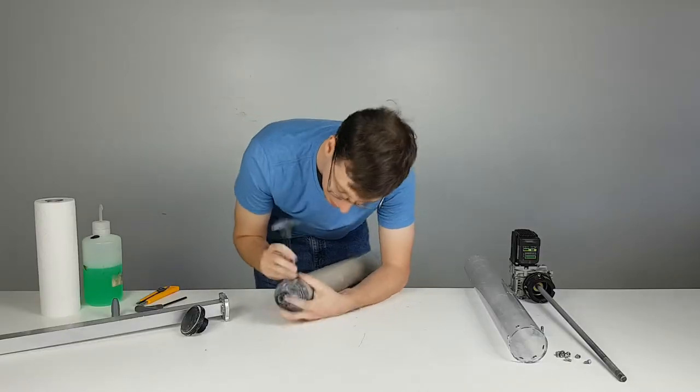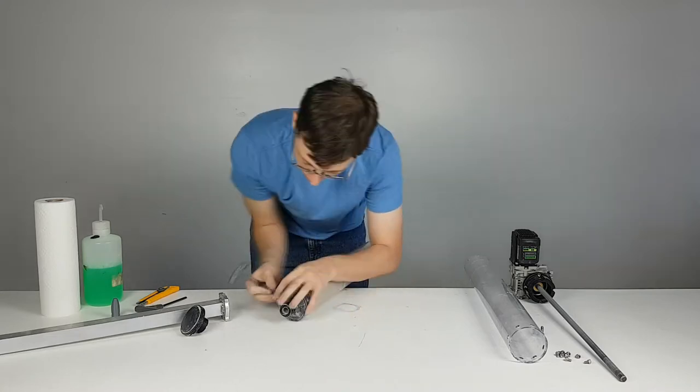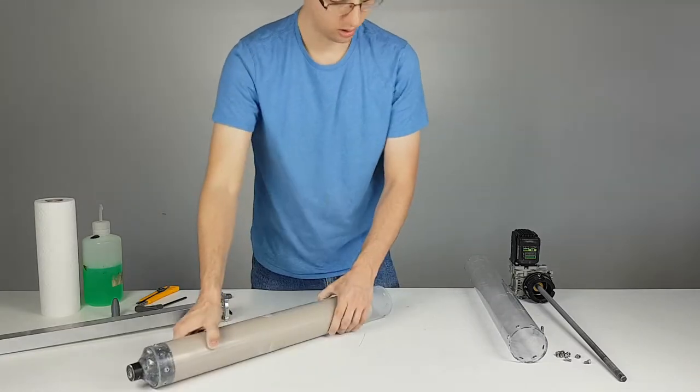These screws are only acting as pins, similar to the pins that we attached the tube to the pug mill with. If they are over tightened they will strip the threads.